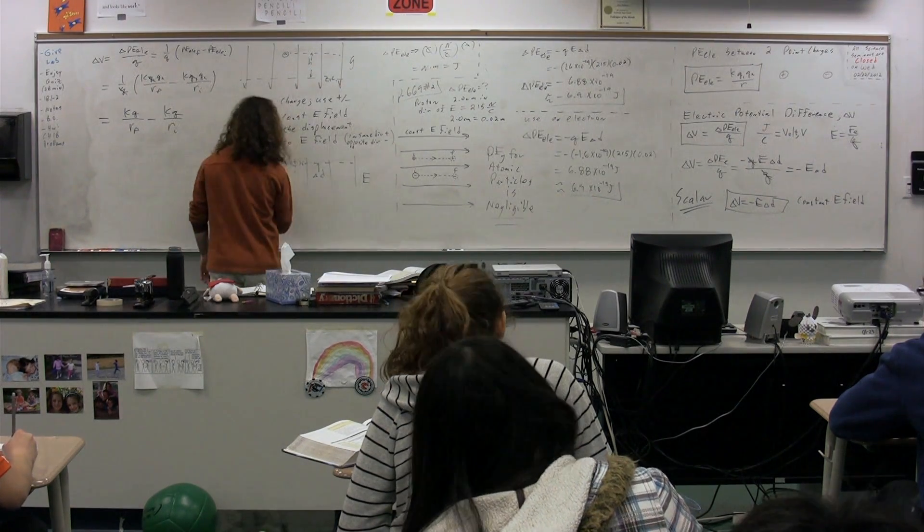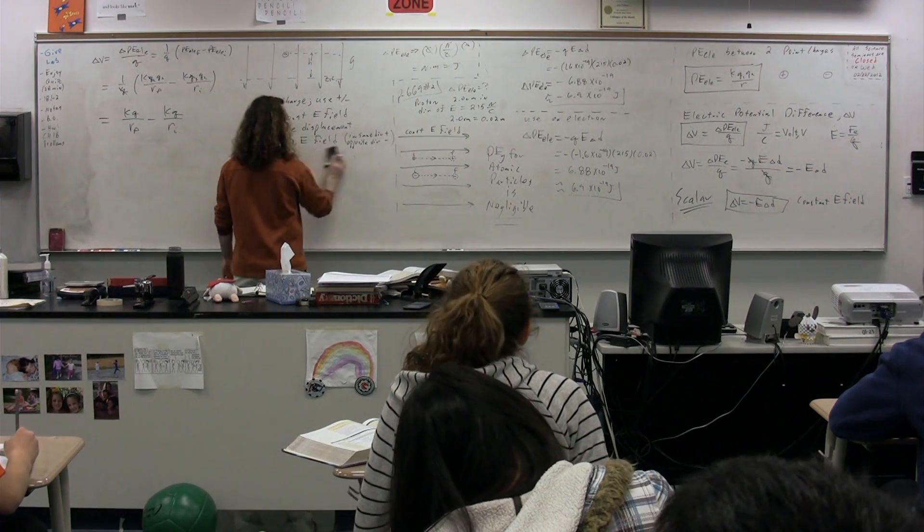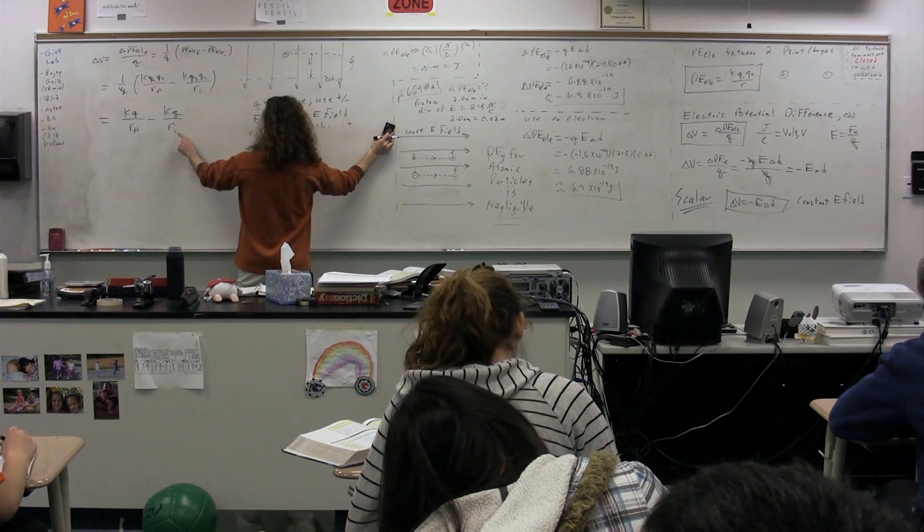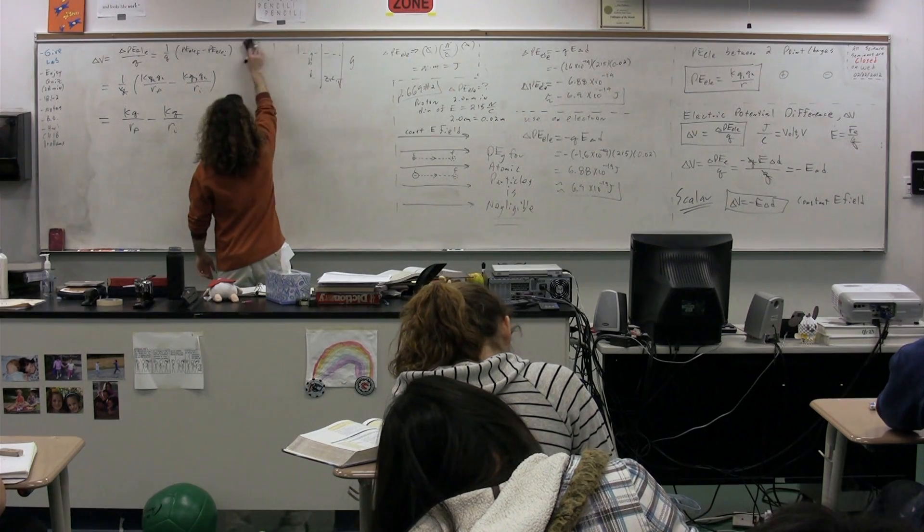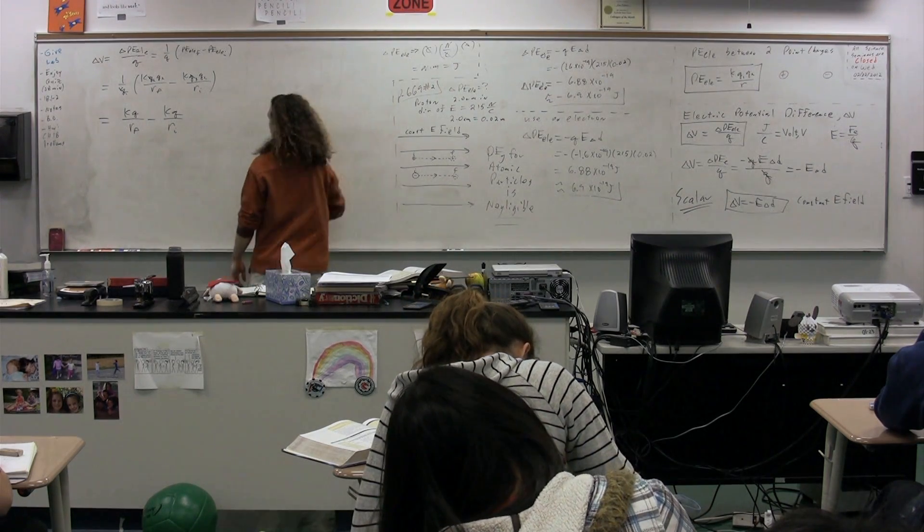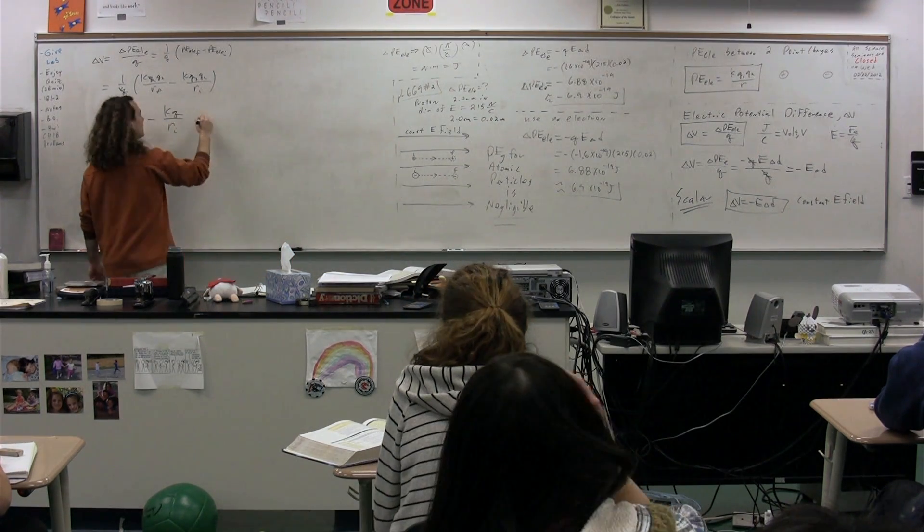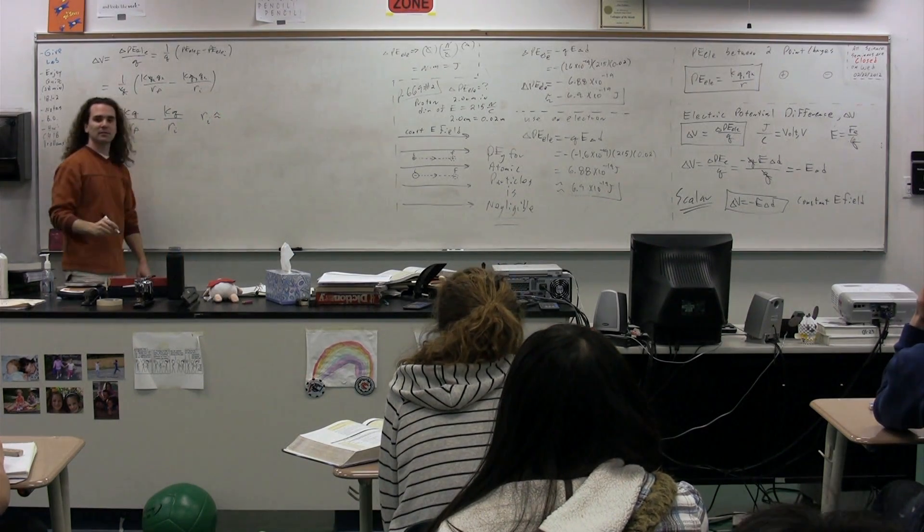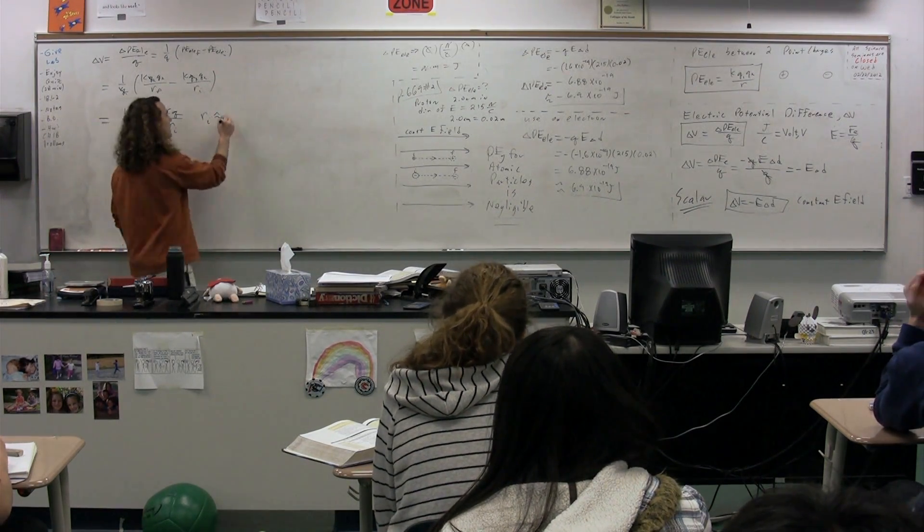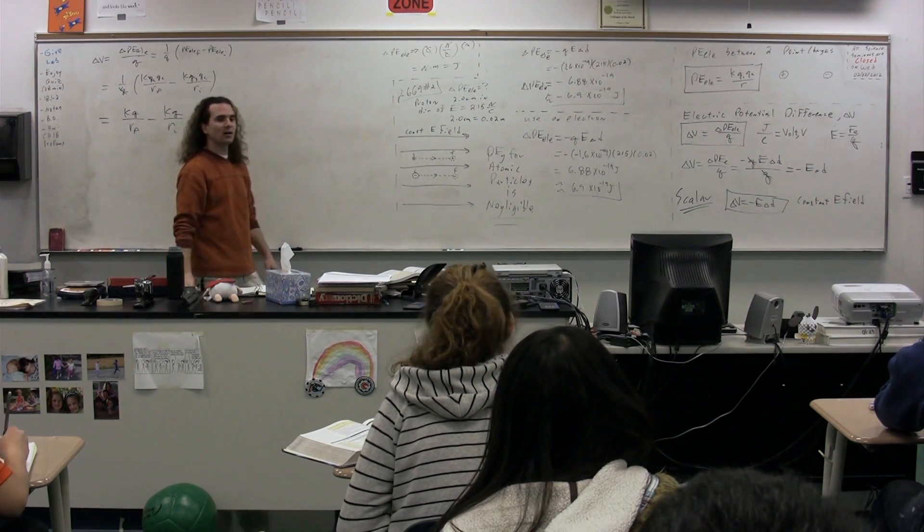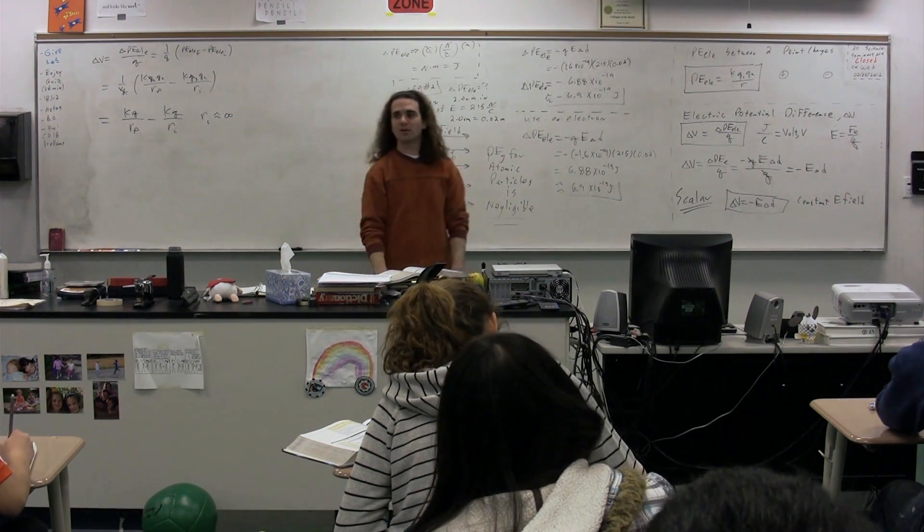So this is the electric potential difference between a point R far away from a point charge and R final from a point charge. So we're going to move from one location to another. And generally, we take the initial point—this is a favorite, you guys are all fans of this—we take the initial point to be approximately infinitely far away from our charge.